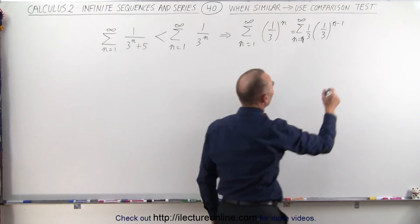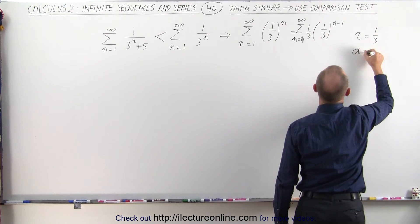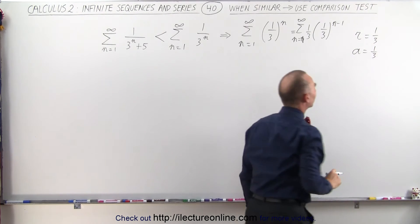Because now we can say that the ratio is equal to 1 third, and the constant a is also equal to 1 third.